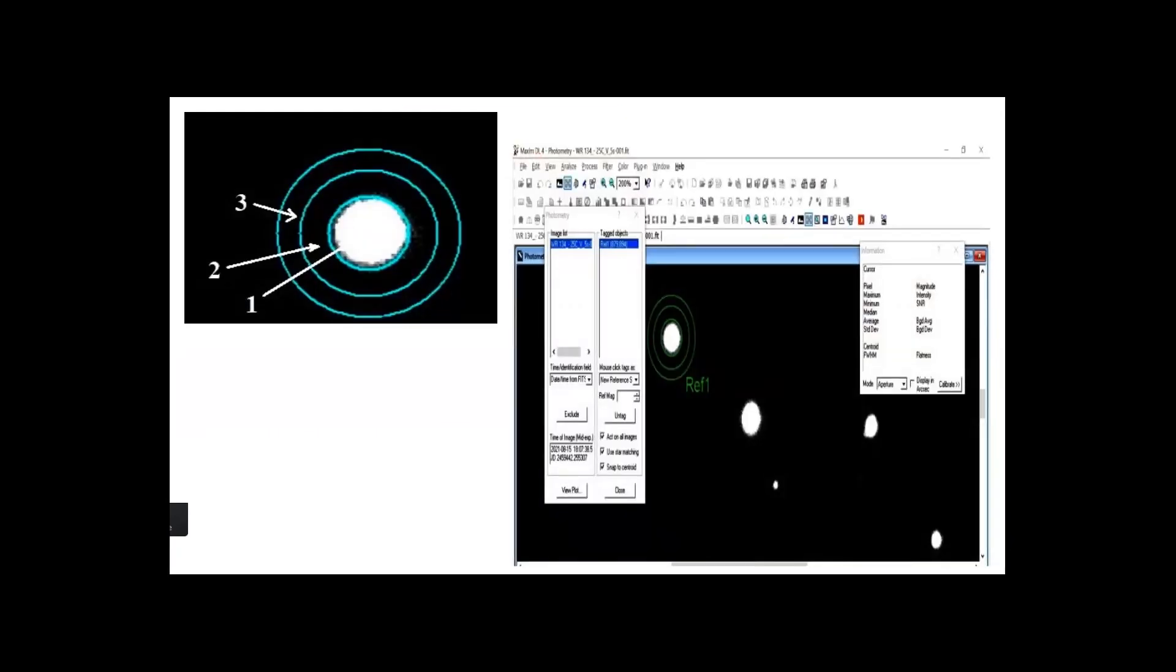After calibration, we can start photometric measurement. For this, we must choose the aperture, which consists of three parts: an inner circle, outer circle, and the part between. Here is the chosen object - this one is our main object, this is the comparison star, and this is the control star. Control stars may be more than one depending on our choosing.